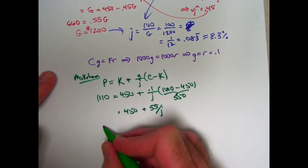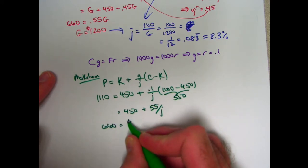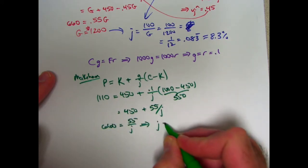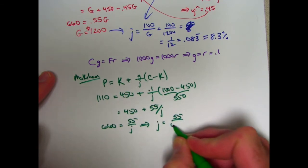Subtract 450 from both sides. 660 is 55 over j. So j should be 55 over 660.